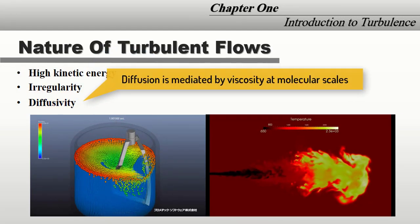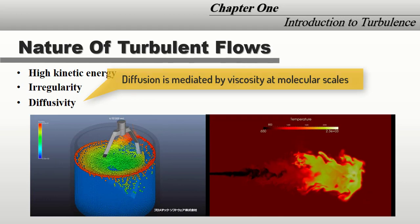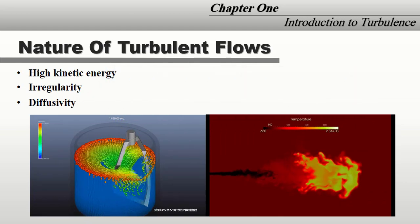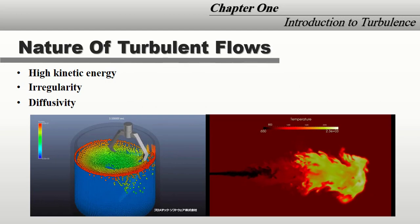Turbulent diffusion is the transport of mass, heat, or momentum due to random motion, which is extremely important for problems dealing with combustion, for example.